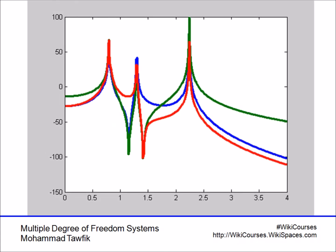If you write and run the code — which I'll explain in the next clip — this is the response you get. The horizontal axis is frequency, ranging from 0 to 4 radians per second, and the amplitude is on a logarithmic scale in decibels. Notice three peaks appearing: the blue curve is for x1, the red for x2, and the green for x3.